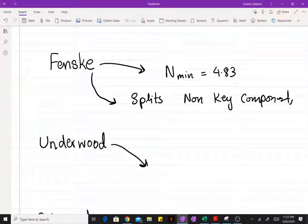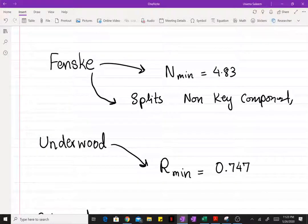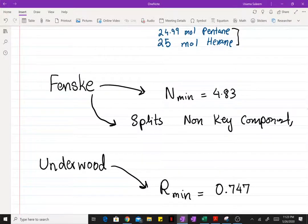To find the minimum reflux ratio, which was equal to 0.747. All right, so now when you're operating at minimum number of stages, your reflux ratio is total, as an infinite reflux ratio.